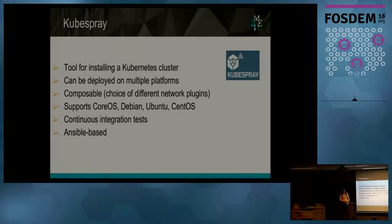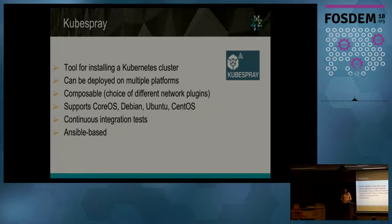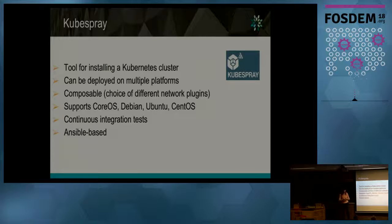Finally, we use KubeSpray. We started working on Kubernetes, and KubeSpray is a set of Ansible playbooks — created inside the Kubernetes community — to stand up a Kubernetes cluster. It can be deployed on multiple platforms: virtual machines with Ansible, or on OpenStack or Amazon. It is very composable — you can choose the kind of network plugin you want to bring in, with different options available. It supports CoreOS, Ubuntu, and Debian. It is solid because it has end-to-end integration testing performed on different platforms, making it reliable. We are starting to use it as a proof of concept, with OpenStack mostly in place, but we are beginning to get Kubernetes integrated into OPNFV as well.